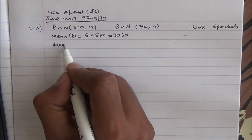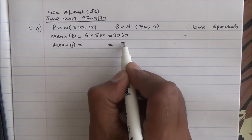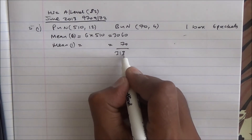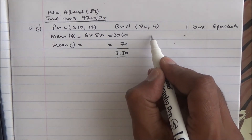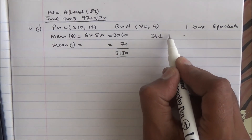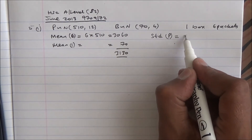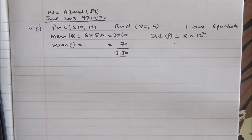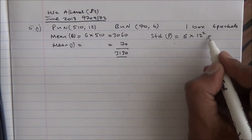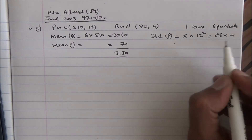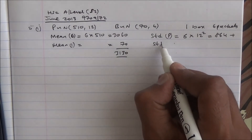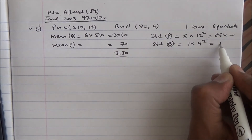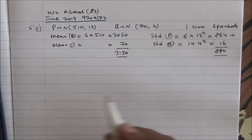The mean for 1 box is 70, and if you add it up, that's 3130. For the new standard deviation for the packets, it's going to be 6 times 12 squared, which is 864. Plus the variance for the box is going to be 1 times 4 squared, which is 16. That comes to 880.